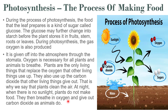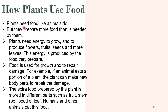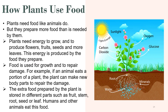Now let's see how plants use food. Plants need food like animals do, but they prepare more food than is needed by them. Plants need energy to grow and to produce flowers, fruits, seeds and more leaves. This energy is produced by the food they prepare through photosynthesis. Plants use light energy and carbon dioxide from the atmosphere, along with water and minerals from their roots, to make food in the form of glucose, and during this process they give out oxygen.